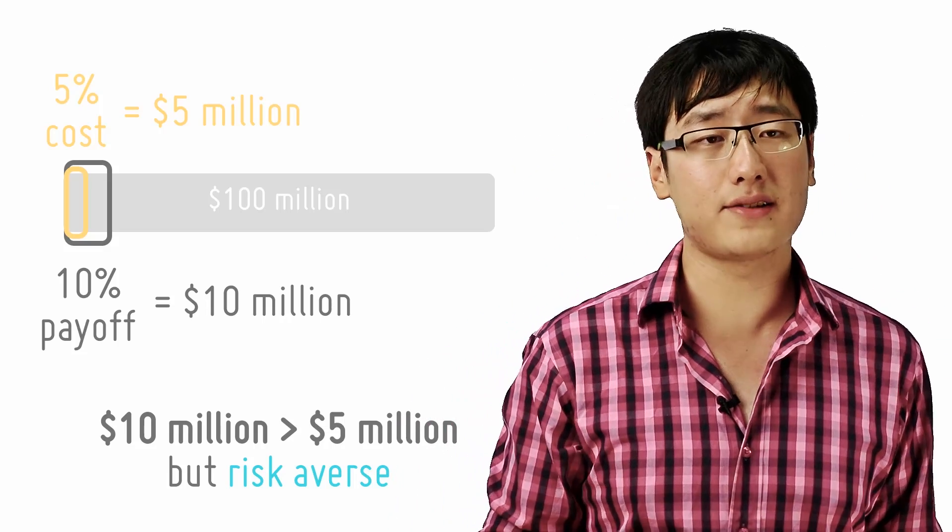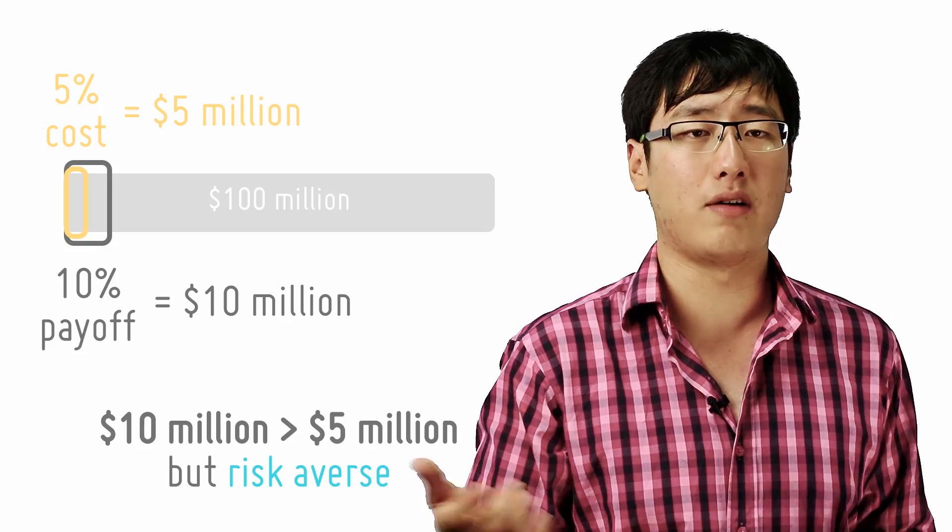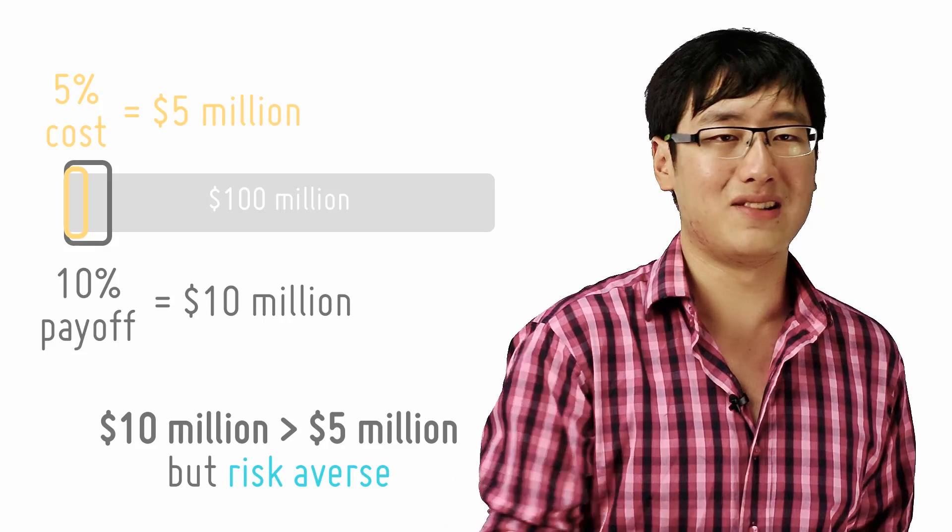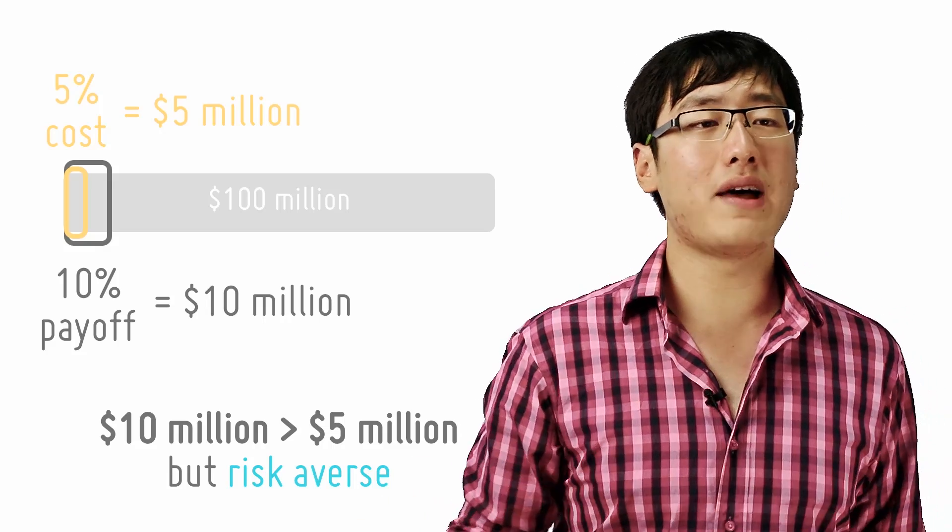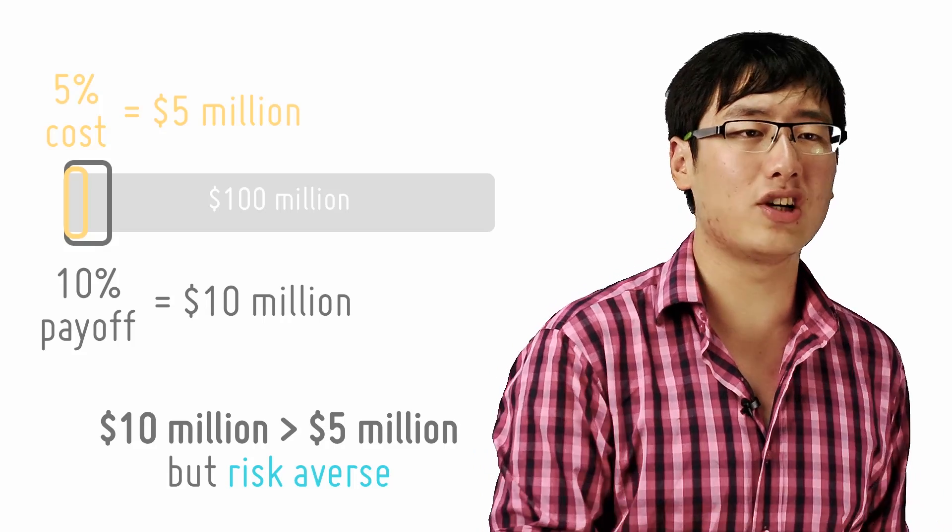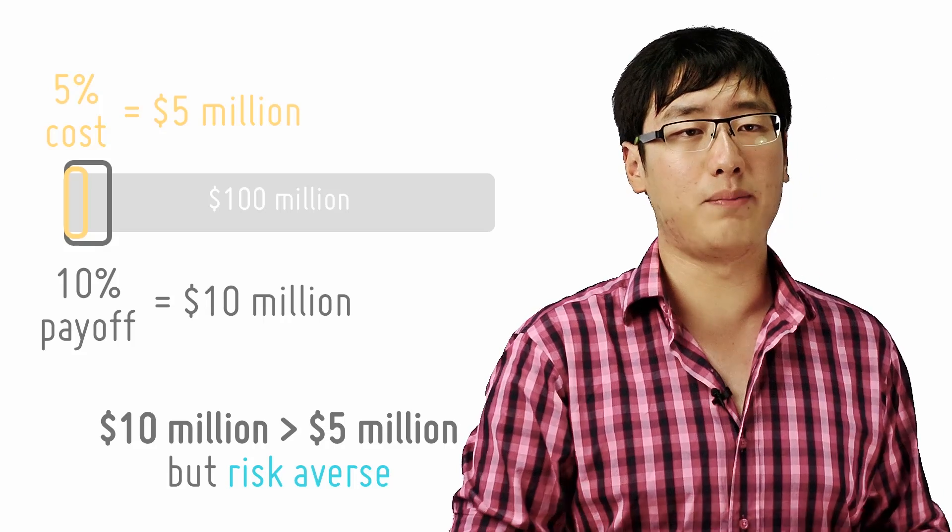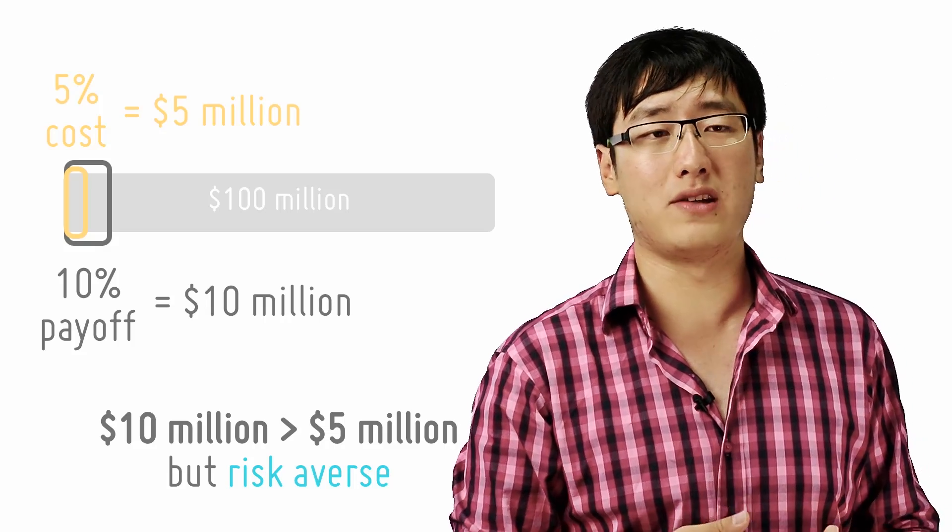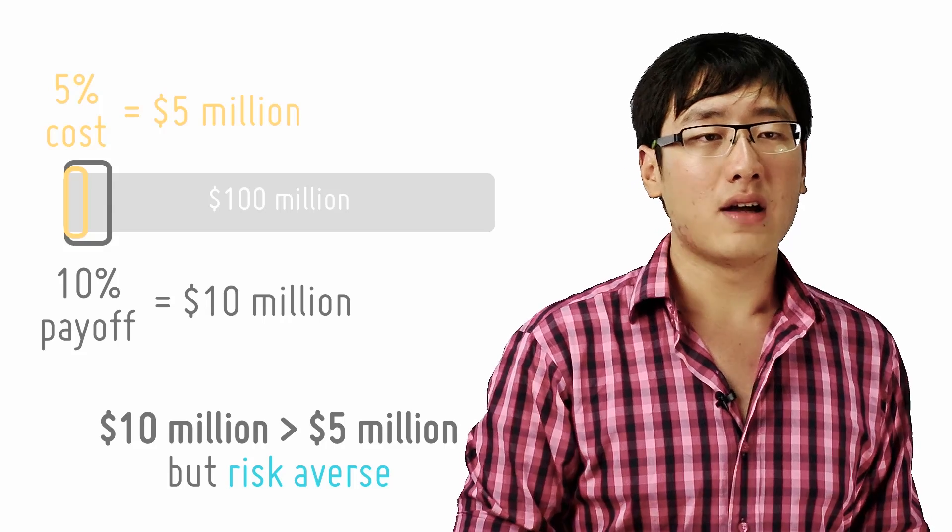But a firm may be risk averse and simply not do the project because of the huge amount of risk, that you only succeed 10% of the time. So he will rather need a much larger payoff to do the project. For example, he may be only willing to do it when it's $20 million.